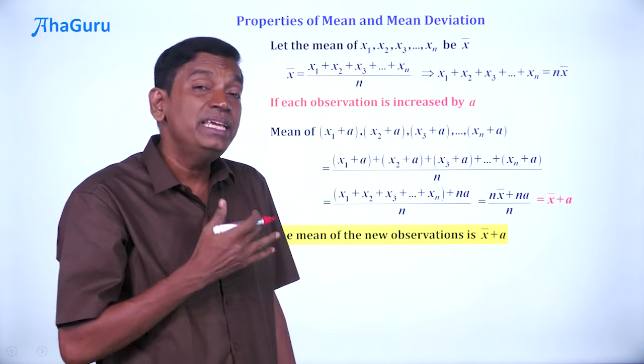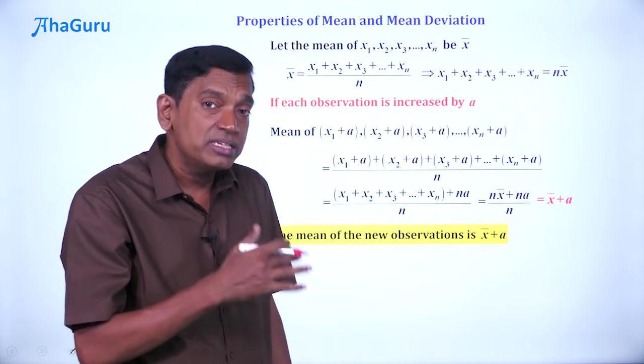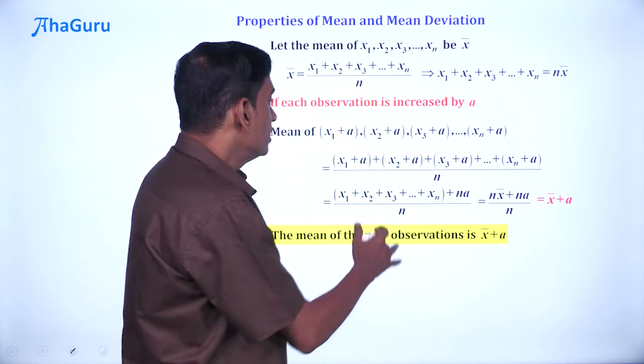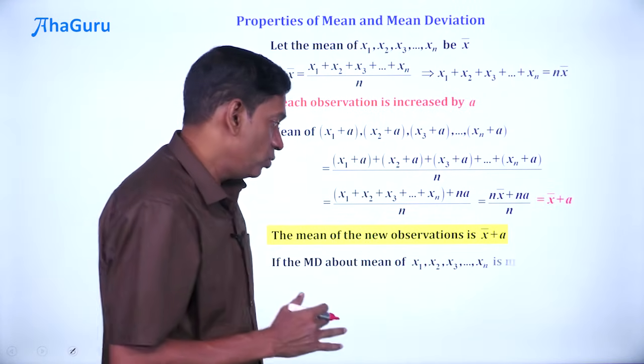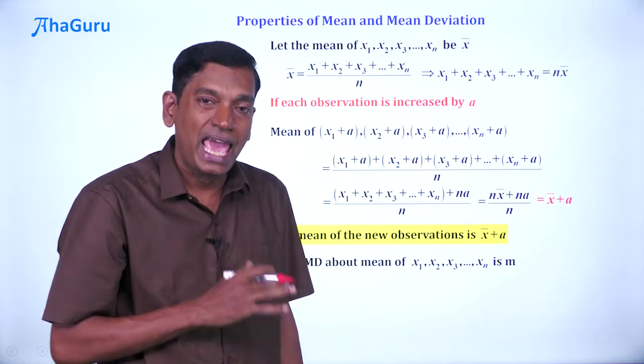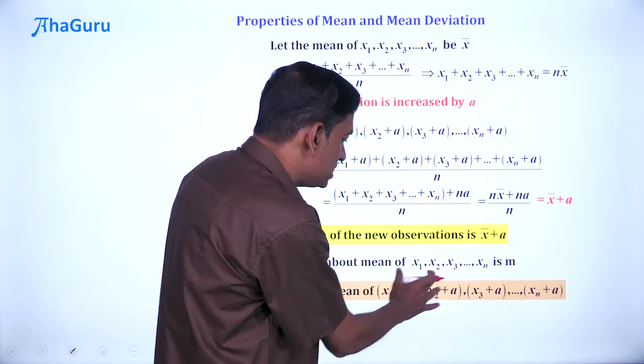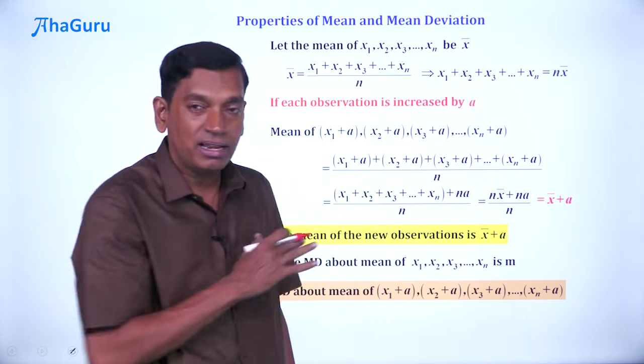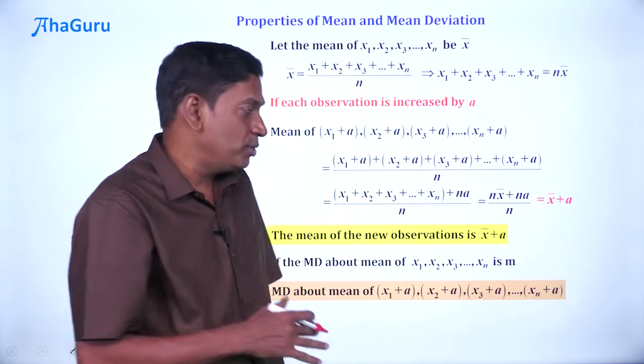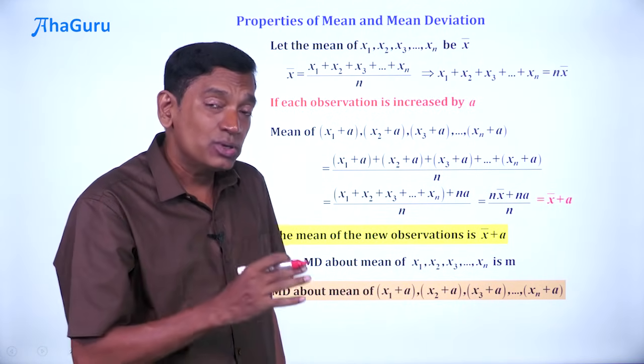What about the mean deviation? Suppose we want to look at the mean deviation about the mean of the new set of observations. The original mean deviation is, let's say, m. What is the mean deviation of x₁ + a, x₂ + a, x₃ + a, etcetera? Do you expect it to be m + a? Think about it.